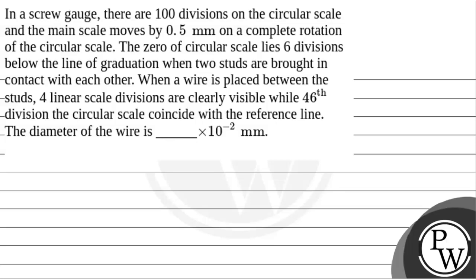Hello. Let's read the question. The question says that in a screw gauge, there are 100 divisions on the circular scale and the main scale moves by 0.5 mm on a complete rotation of the circular scale. The 0 of the circular scale lies 6 divisions below the line of graduation when two struts are brought in contact with each other. When a wire is placed between the struts, 4 linear scale divisions are clearly visible while the 46th division of the circular scale coincides with the reference line. The diameter of the wire is dash into 10 to the power minus 2 mm.